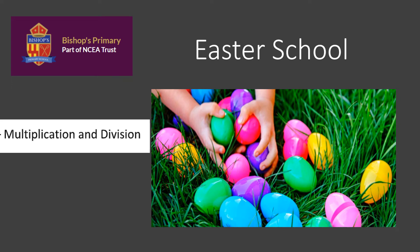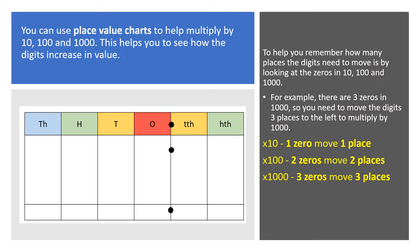Today we're going to be looking at multiplication and division. We will start by multiplying and dividing by 10, 100 and 1000. We can use the place value chart to help us multiply and divide by 10, 100 and 1000. This will help us see how the digits increase or decrease in value.